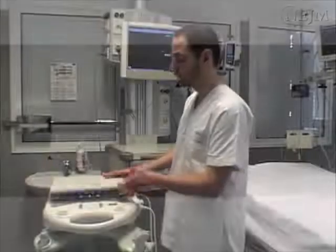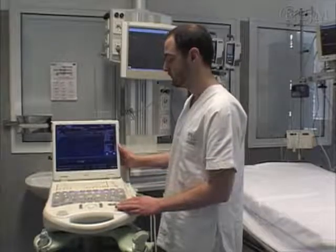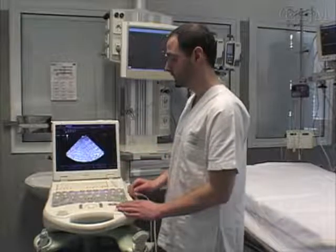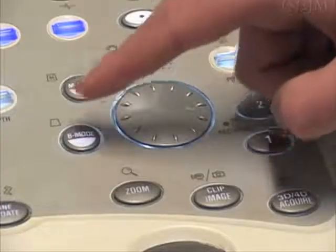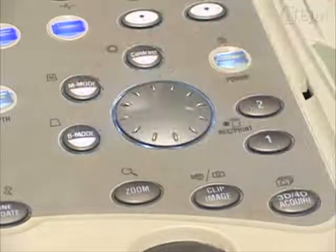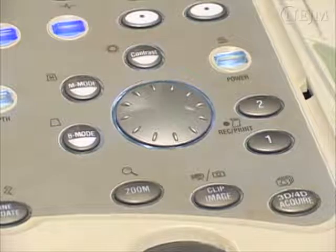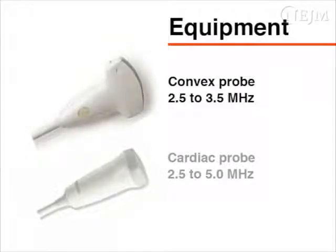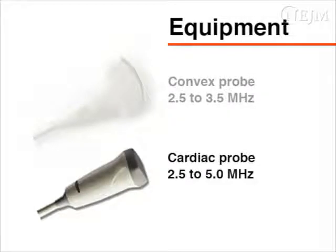Gather the necessary equipment. You will need an ultrasound unit with basic software. Use the brightness mode, generally known as B mode, to locate the structures of the chest and the pleural effusion. The unit should also be equipped with the appropriate probes: a convex probe with a frequency of 2.5 to 3.5 MHz, or a cardiac probe with a frequency of 2.5 to 5 MHz.